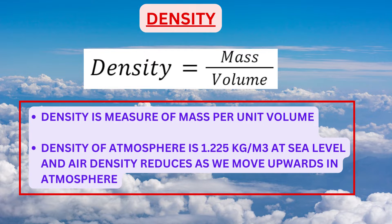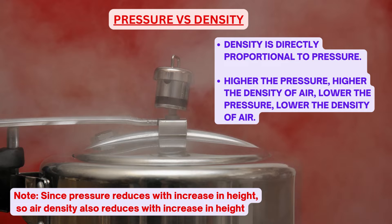Relative density: when we compare the density of air with some datum, it is called relative density. For example, relative density of air at 20,000 feet is half, or 50%, of the density at sea level. Pressure versus density: density is directly proportional to pressure — higher the pressure, higher the density of air; lower the pressure, lower the density of air.